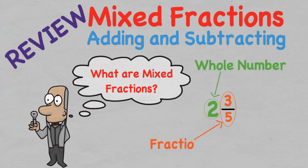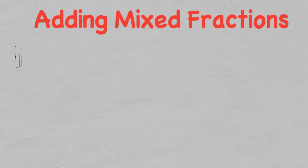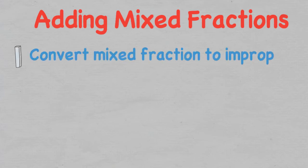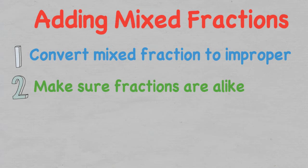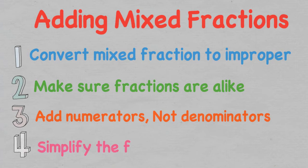In the previous video we discussed how to add and subtract mixed fractions using four easy steps: one, convert a mixed fraction into an improper fraction; two, make sure the fractions are alike; three, add the numerators together but not the denominators; and four, simplify the fraction if possible.